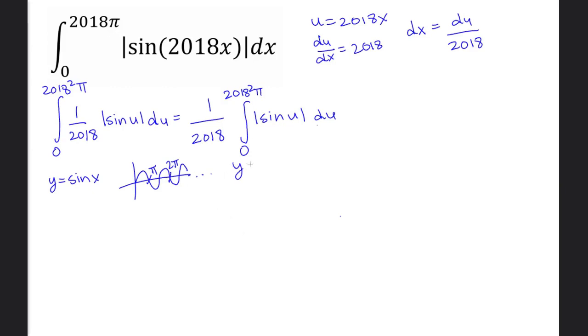The graph of y = |sin x| is a reflected version of this. It's going to be like this, because it's reflected every time it goes under 0. So this is still π, this is still 2π, this is 3π, and so on.